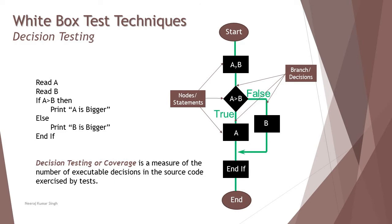So what exactly is decision testing or coverage? The definition is a measure of the number of executable decisions in source code exercised by the test. That means how many tests you have created, how many decisions are covered by that divided by total number of decisions. That's how you measure decision coverage.